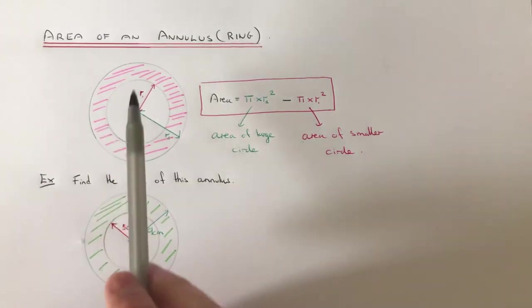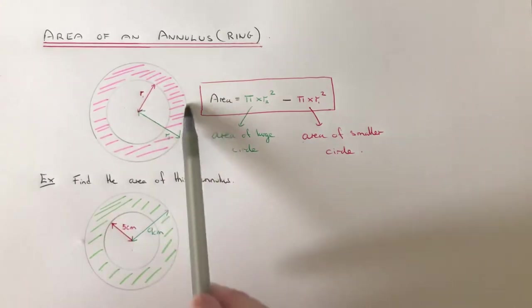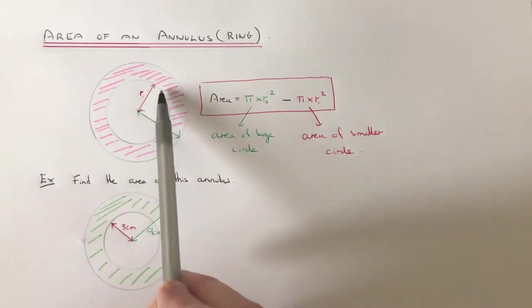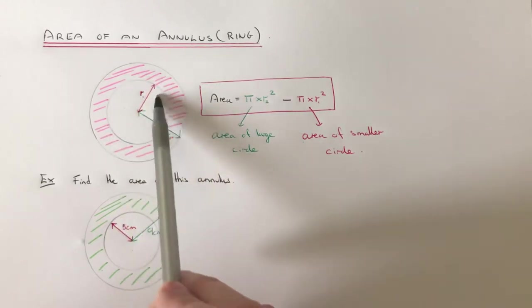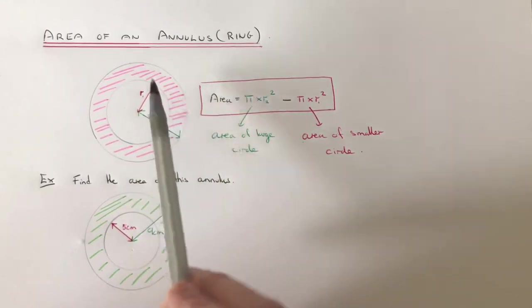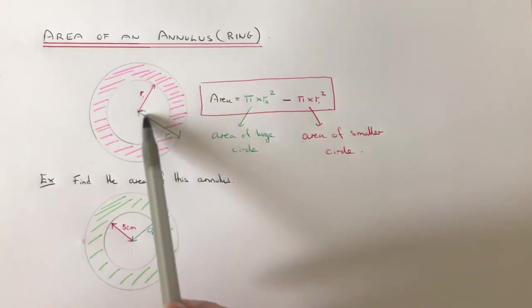And to do this, you work out the area of the larger circle first, and then you subtract the area of the smaller circle. To do it, you'll just need the radius of the small circle and the larger circle.